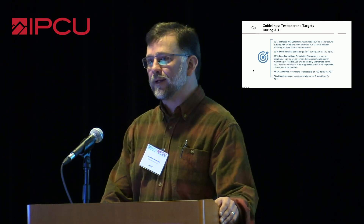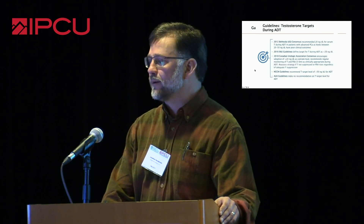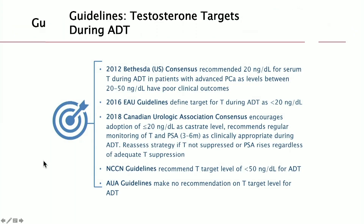Fortunately, some of our guidelines have added some sense to the debate. Both the U.S. consensus, the EAU guidelines, and the Canadian guidelines all three suggest testosterone should be less than 20. Unfortunately, the NCCN is still stuck with the FDA at the level of 50, and the AUA chooses to remain silent on the point.